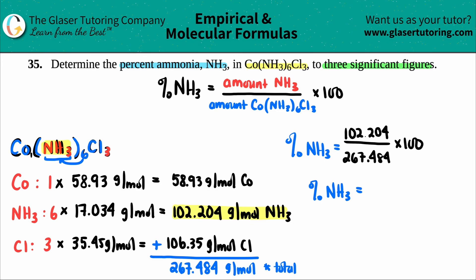Okay. So the percent ammonia NH3 is 102.204 divided by 267.484. And then times that by 100. They told us three sig figs. So 38.2 and that's it. So out of this whole compound, ammonia takes up 38.2% out of 100. And that's it.